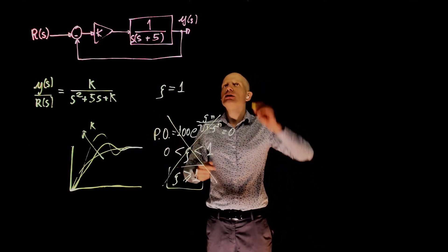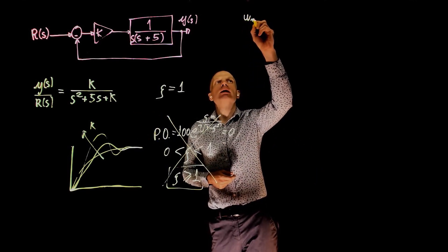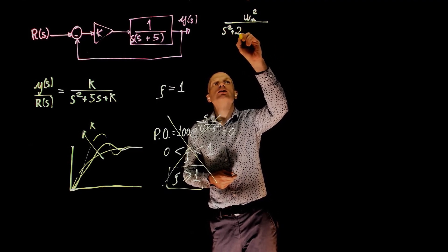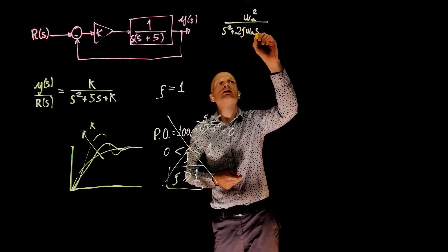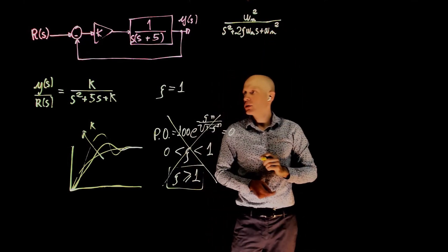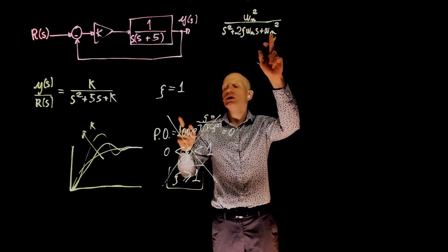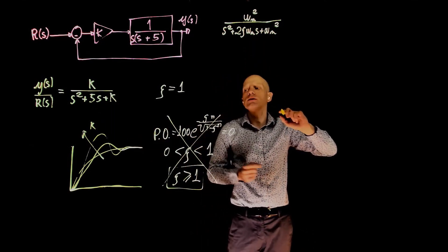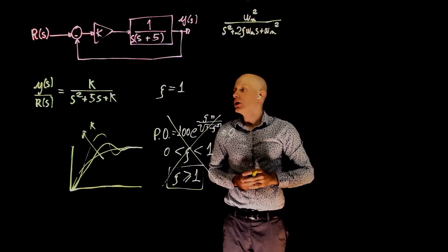The standard form for the second-order equation is omega n squared over s squared plus 2 zeta omega n s plus omega n squared. And now we can match omega n and zeta omega n with this expression here and find our values and set zeta to 1.